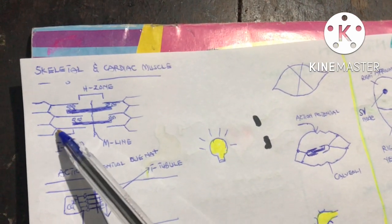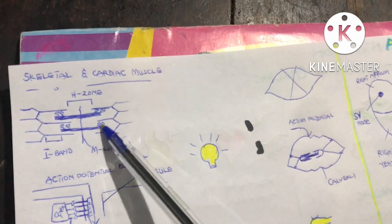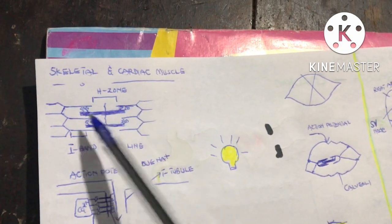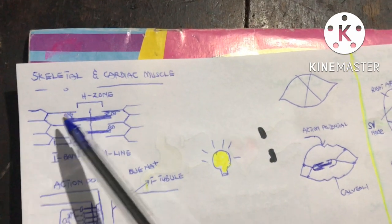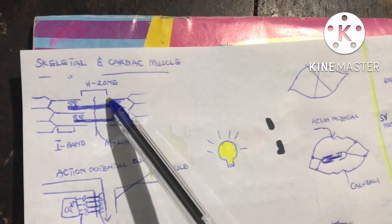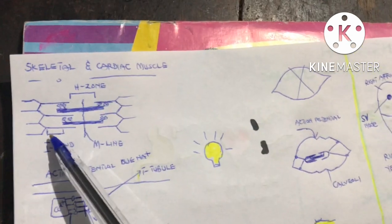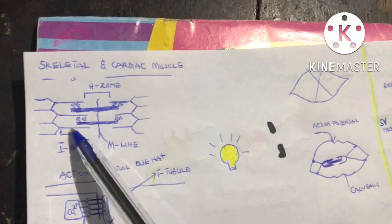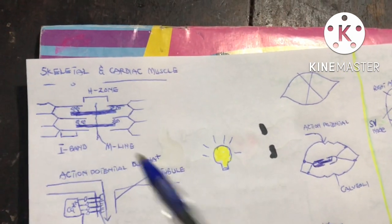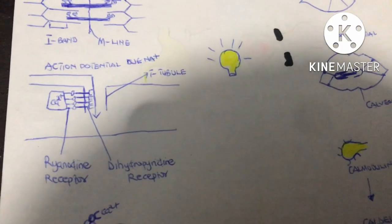The I band is the part that consists of only thin filaments. During contraction, the thick filaments pull the thin filaments towards the M-line. The length of the thin and thick filaments does not change, but the H zone decreases because the thin filaments are pulled inward, and the I band also decreases because the region of only thin filaments narrows.